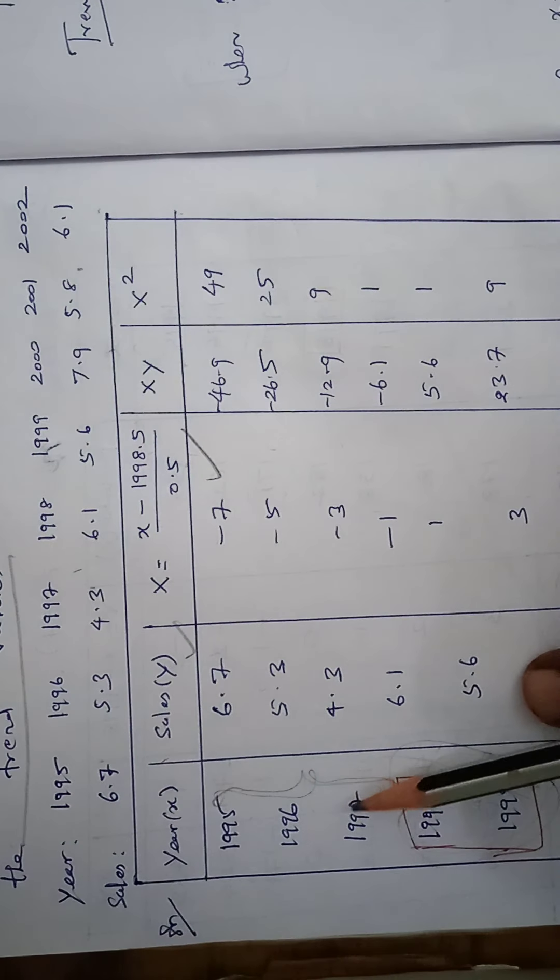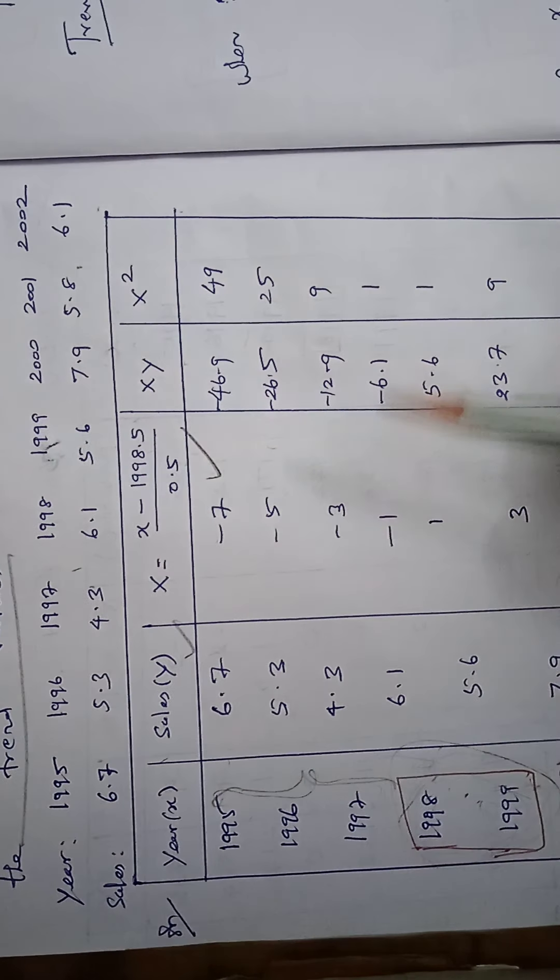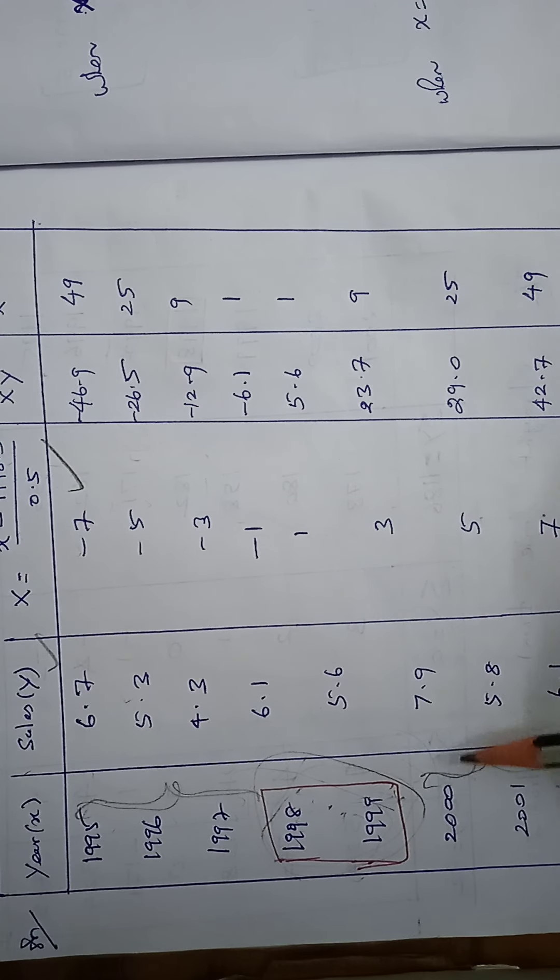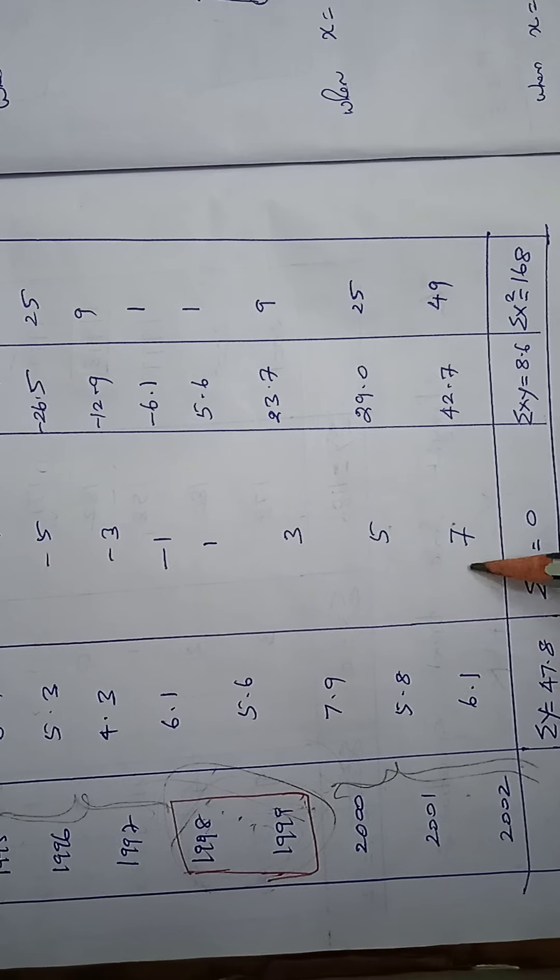So similarly 1997 is minus 3 and 1998 is minus 1 and 1999 is 1 and 2000 is 3. 2001 is 5 and 2002 is 7. Next.